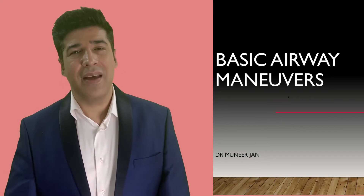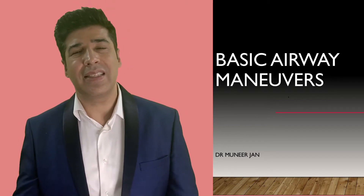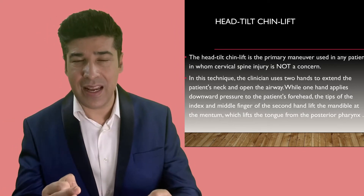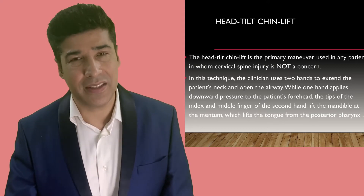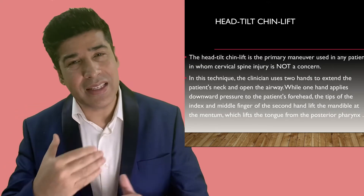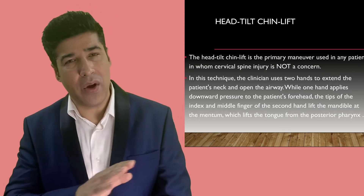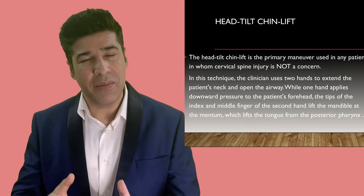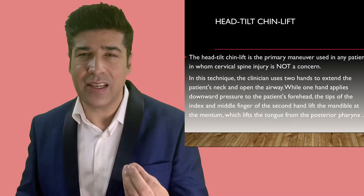The first important maneuver I want to discuss is the head tilt and chin lift. This can be done in a situation where there is airway obstruction, but you have excluded any cervical spine injury. If you suspect or there is a proven cervical spine injury, please do not do this maneuver. I will be demonstrating this in the video.